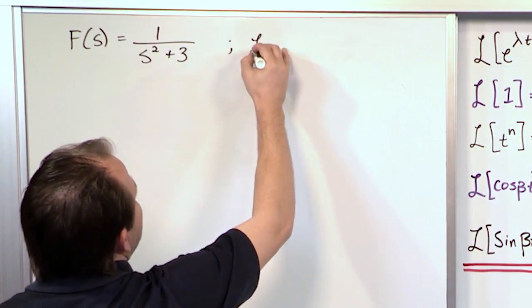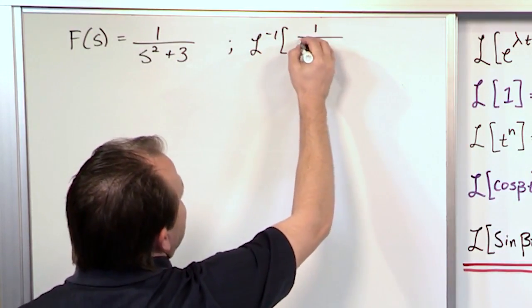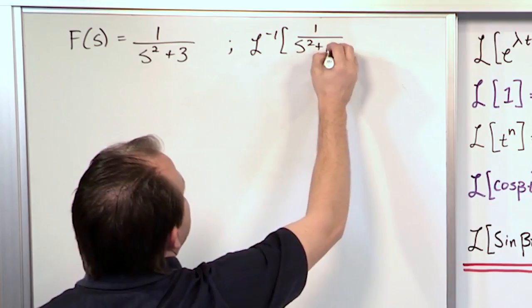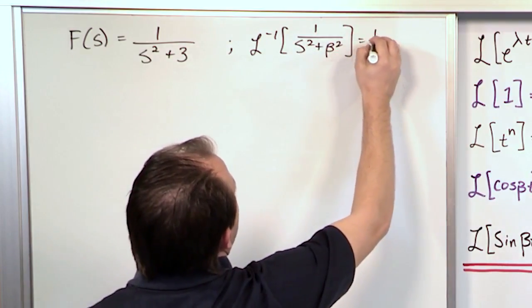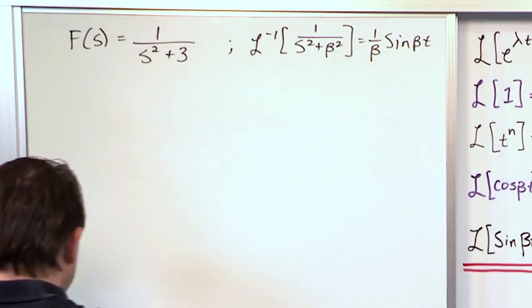What we're going to use, I'll just write it down so you have it in front of you. Laplace transform inverse of 1 over s squared plus beta squared. And we just say that's 1 over beta sine beta t. All right.